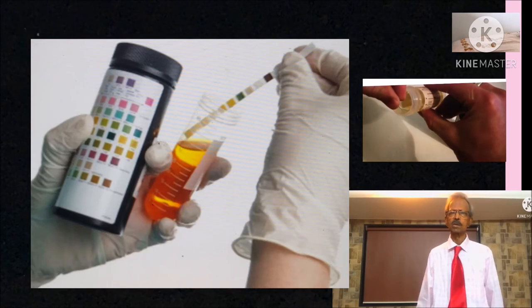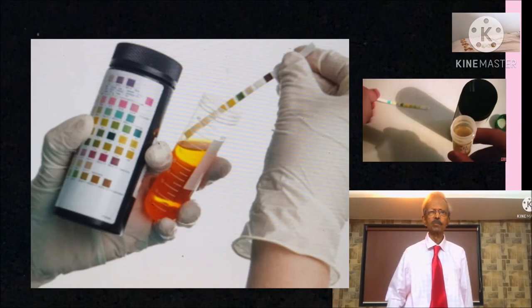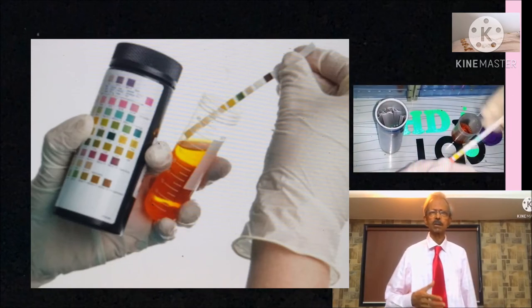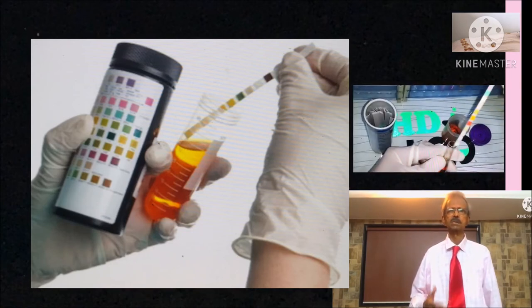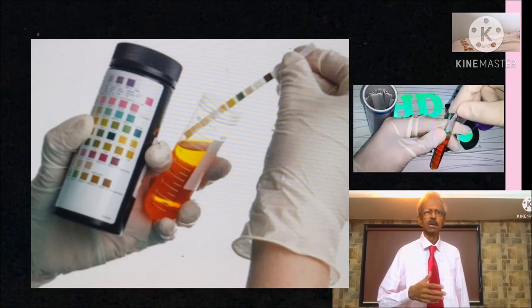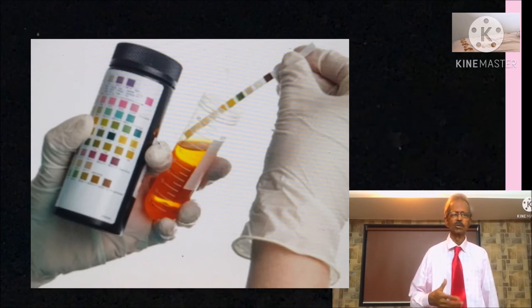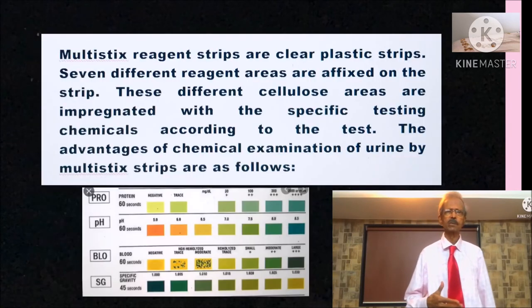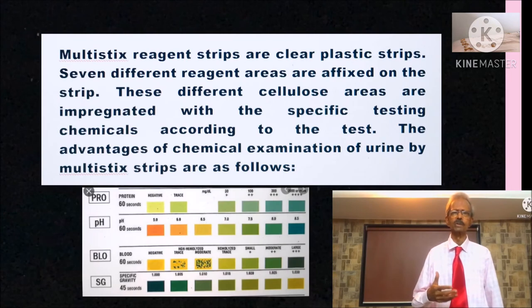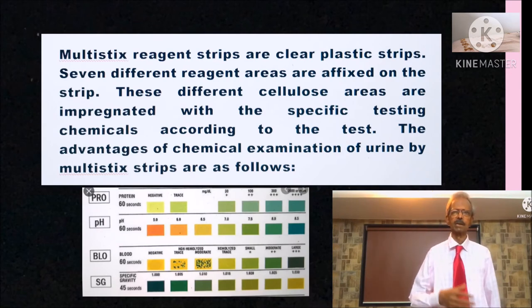Urine chemical examination can also be performed by using urine strips in 2-3 minutes. Although these strips are expensive, the method is very simple, does not require corrosive reagents and it is specific and sensitive and also does not require centrifuged urine. Multi-strips reagent strips are clear plastic strips. Different reagent areas are fixed on the strip and these different cellulose areas contain specific testing chemicals according to the test.